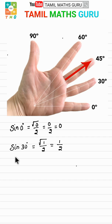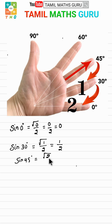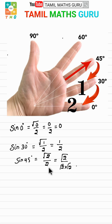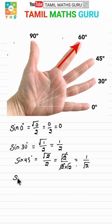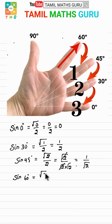For sin 45, there are 2 fingers below, so square root of 2 by 2, which simplifies to 1 by root 2. For sin 60, there are 3 fingers below, so square root of 3 by 2. Sin 60 value is square root of 3 by 2.